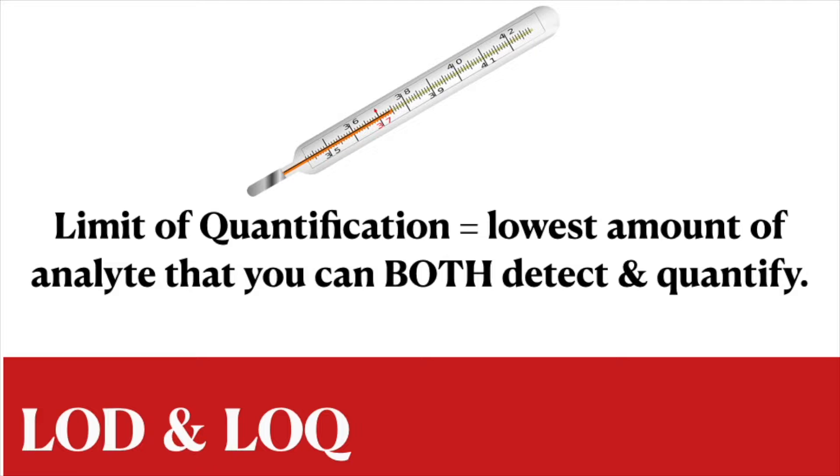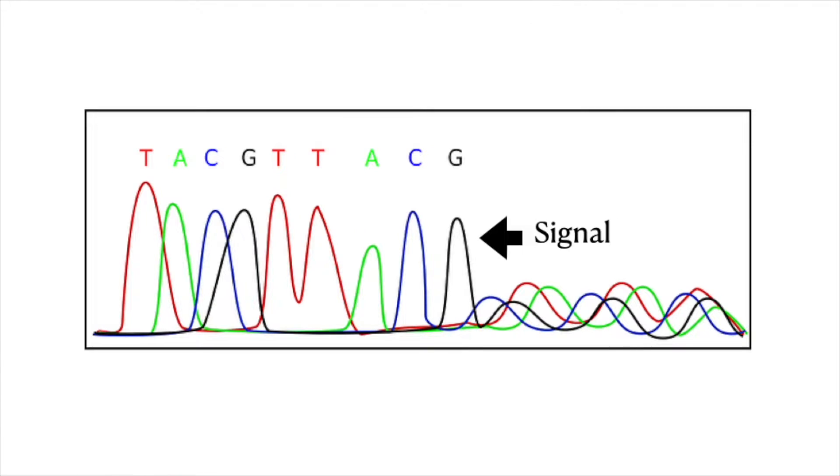The limit of quantitation, on the other hand, is the lowest amount of the analyte that you can both detect and quantitate. It involves knowing the signal to noise ratio.